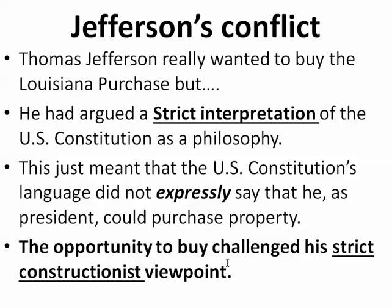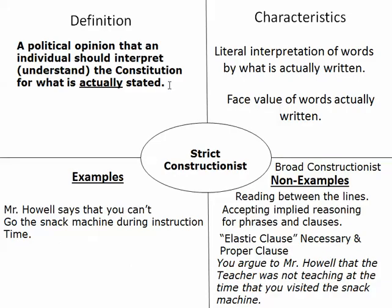In his past arguments against Alexander Hamilton and the Federalists, Thomas Jefferson and his Democratic-Republican Party believed in a strict interpretation of the Constitution. His philosophy was: if the Constitution's language did not expressly say that he could do something, then he was restricted as President from doing it. In other words, he could not purchase the Louisiana Territory because nowhere in the Constitution did it say he could buy it. The opportunity to buy the Louisiana Purchase challenged his strict constructionist view. A strict constructionist is someone with the political opinion that an individual should interpret the Constitution for what is exactly stated.